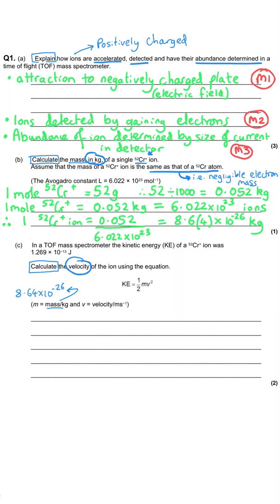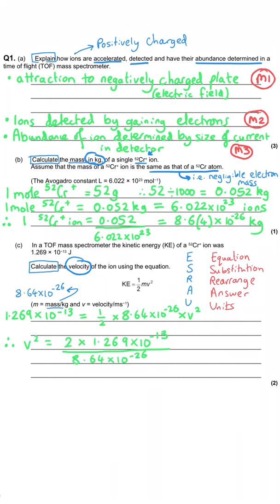So there's a couple of different ways to do this. I suggest you substitute the numbers into the equation first, and then you rearrange the equation with those numbers. So having done that, we get V squared is equal to 2 multiplied by the energy in joules, so 1.269 times 10 to the minus 13, divided by our mass that we've calculated, 8.64 times 10 to the minus 26.